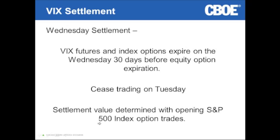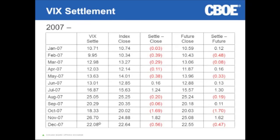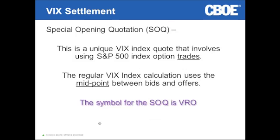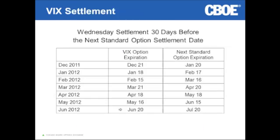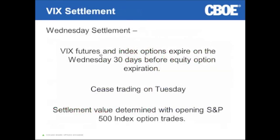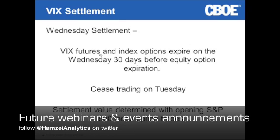This is significant because the VIX index cannot be replicated — it's quoted based on the midpoint. The VIX is a measure of implied volatility as priced in by S&P 500 index options. If you're using the midpoint, you're basically getting an average of the implied volatility of the bid and implied volatility of the offer.